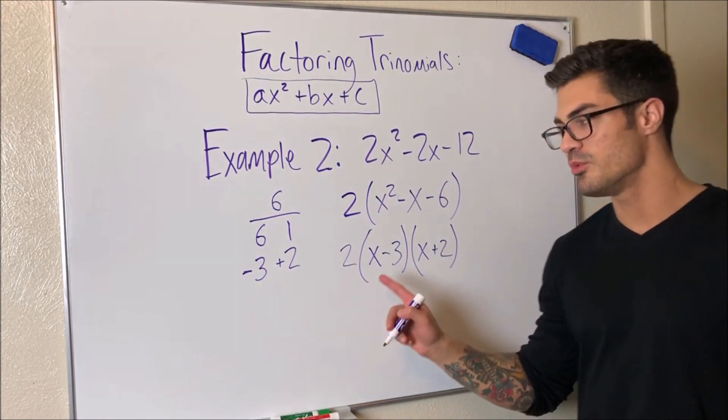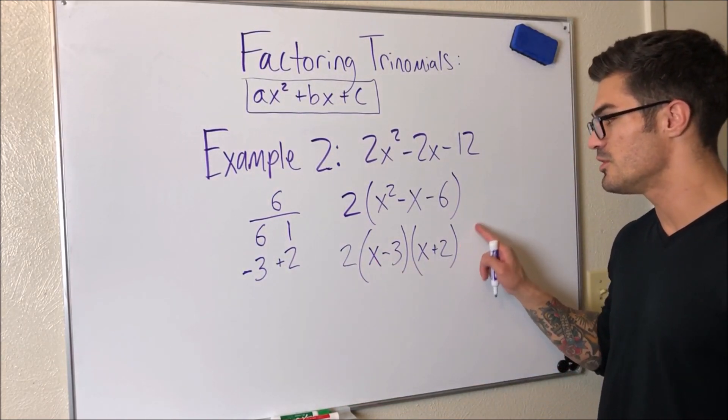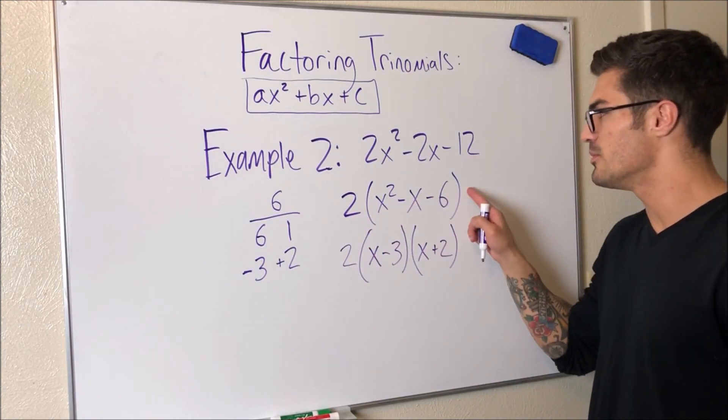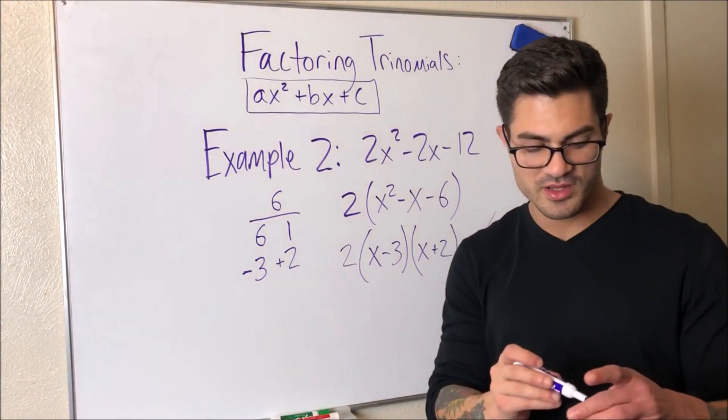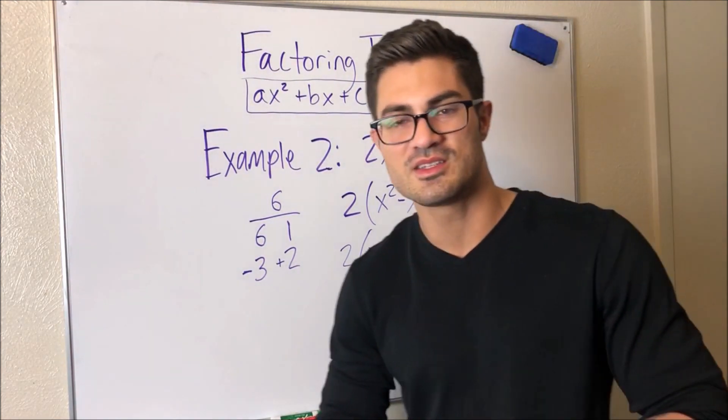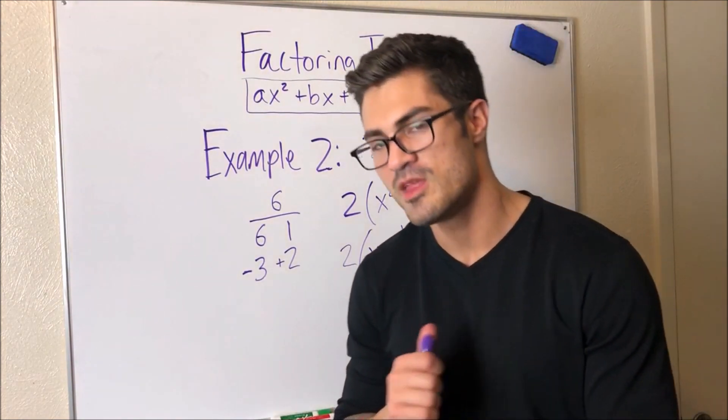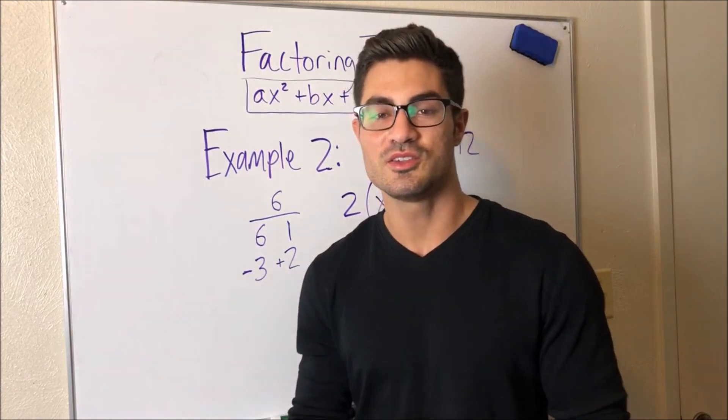And if we want to check our answer, what can we do? Well, we can foil everything out. So first I would foil this out and you get from here back up to here, and then you distribute this two back in and you get from here back up to here and you can check your answer. I always recommend checking your answer unless time is of the essence. If you're on an exam, maybe wait until the very end and then go back and check it. But it's always a good idea to check your answer, especially when you're still learning this.